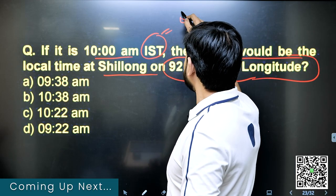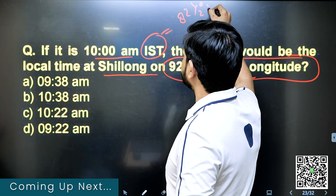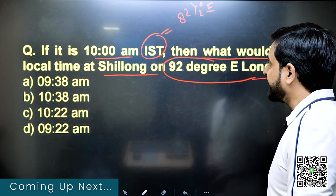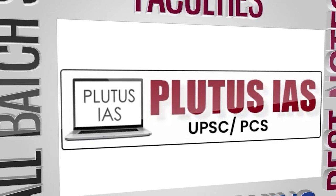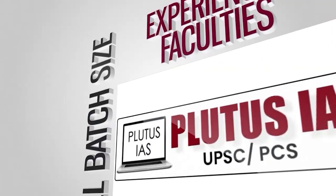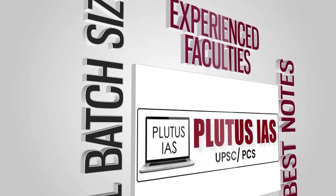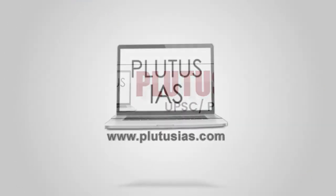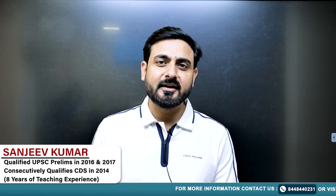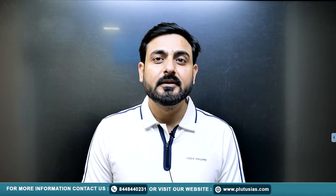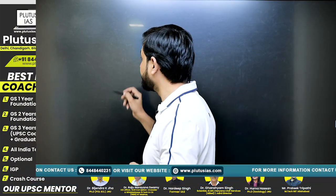IST is equivalent to 82 and half degree East — it is 10 a.m., meaning at 82 and half degrees, this is 10 a.m. Hello everyone, I'm Sanjee Kumar, faculty of geography at Plutus IAS. Today I bring another topic: latitude and longitude, their applications, as well as the daytime saving concept. Without wasting time, let's proceed.